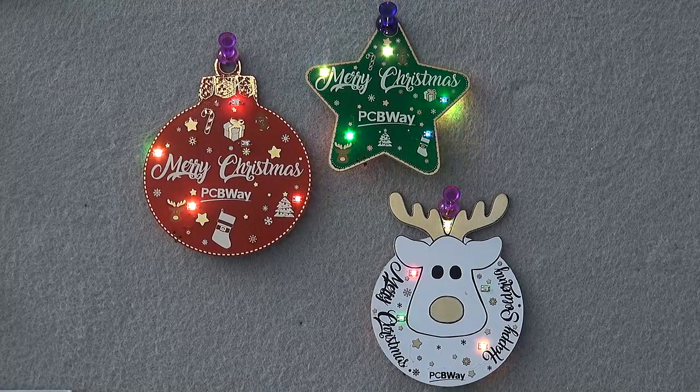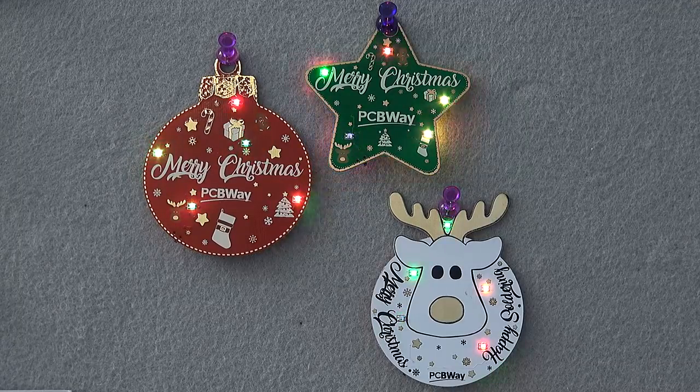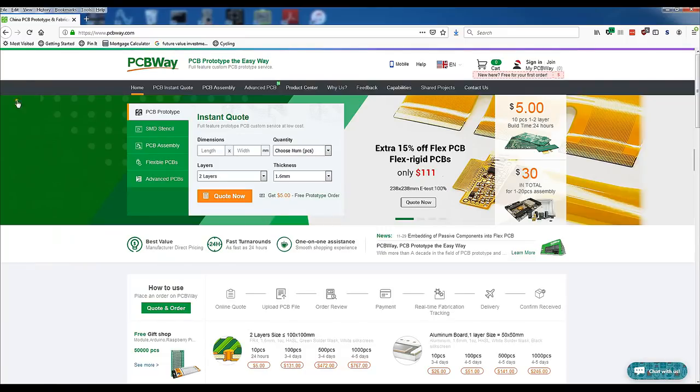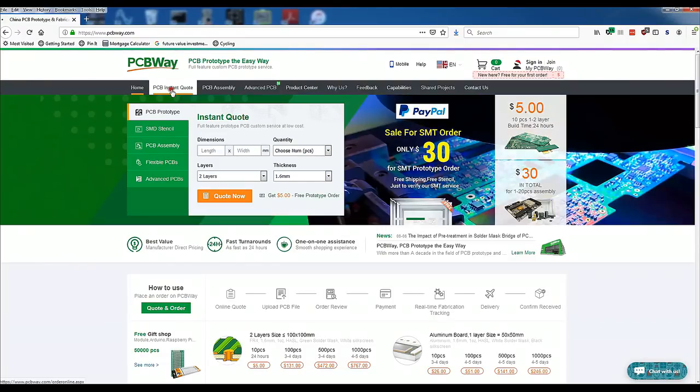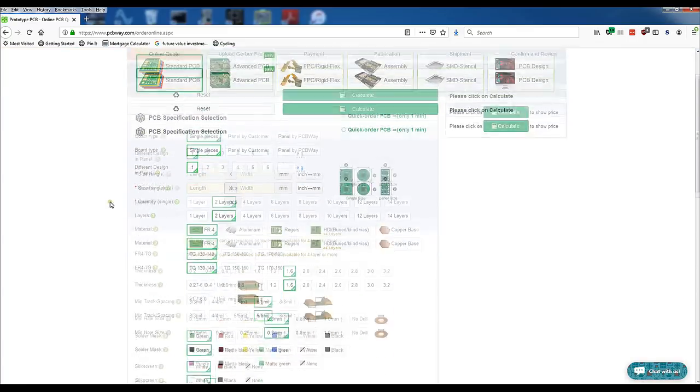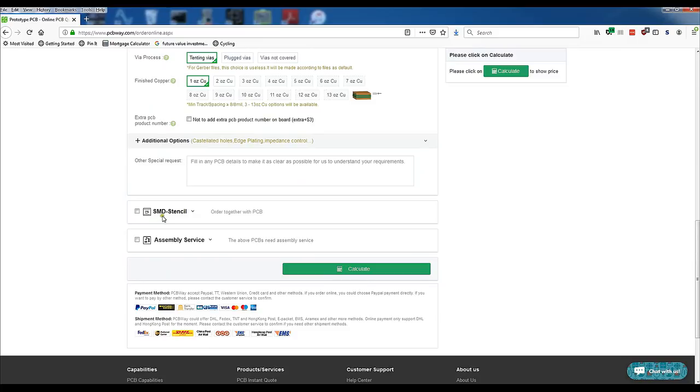Whether you need some fun PCBs for the holidays or something more serious, head over to the PCBWay website and click on the PCB instant quote. Then you can select various types of PCBs and your PCB specifications. You can then select if you want the stencil mask and even the assembly service. Then click calculate and simply place your order.